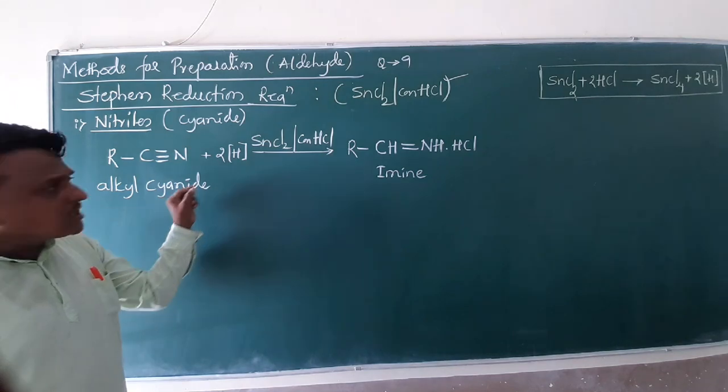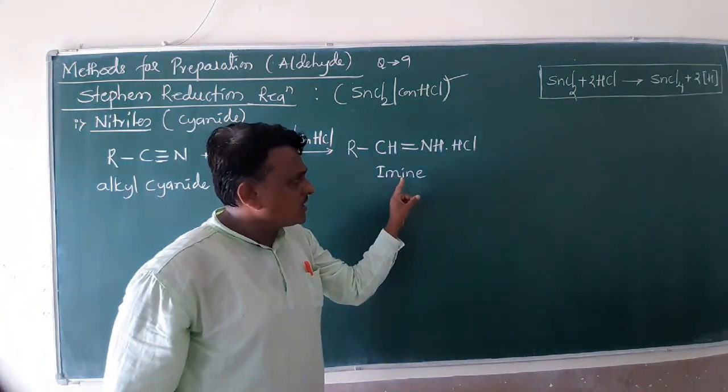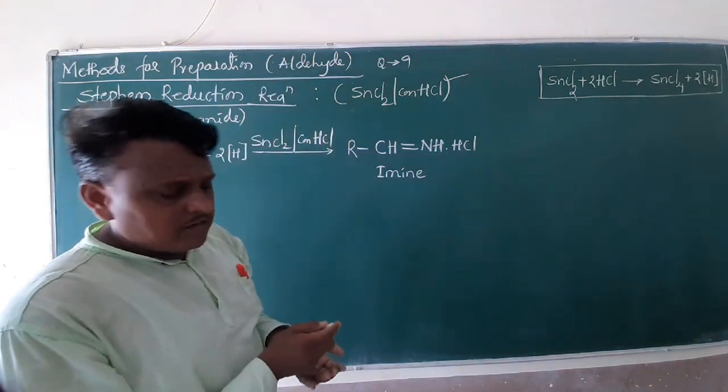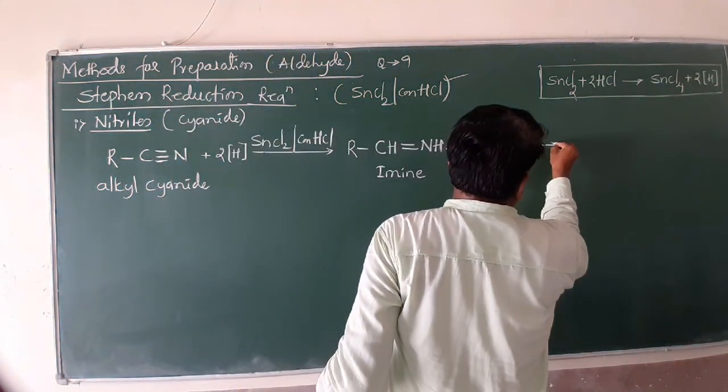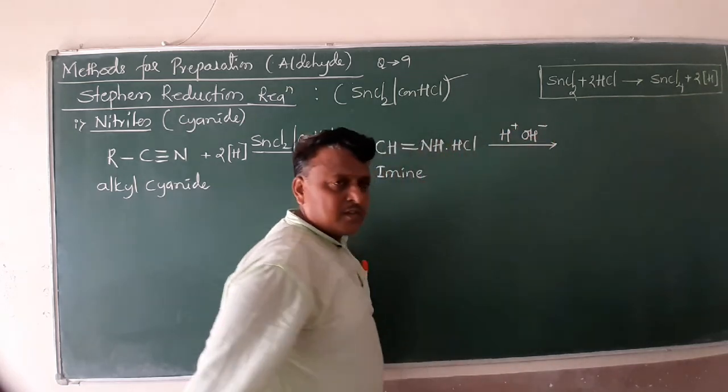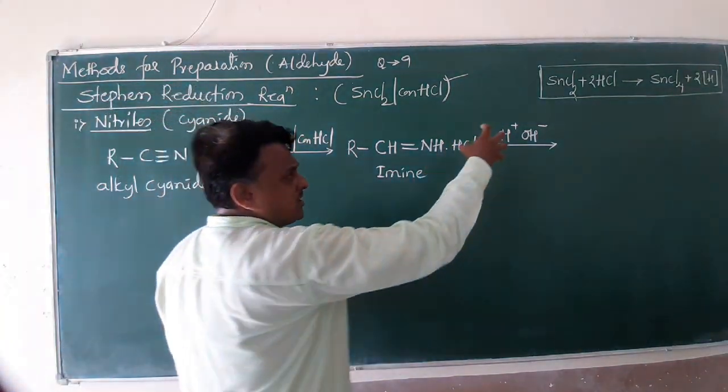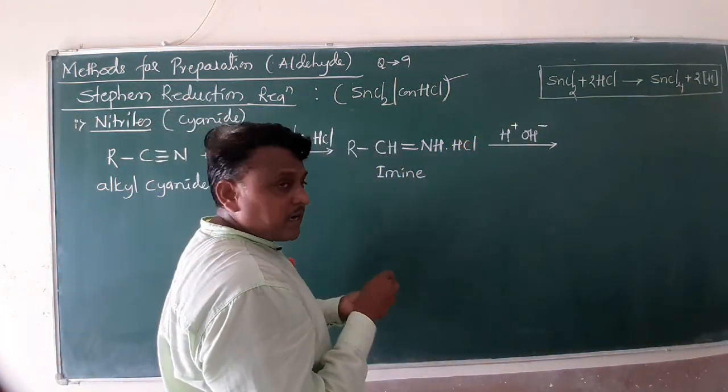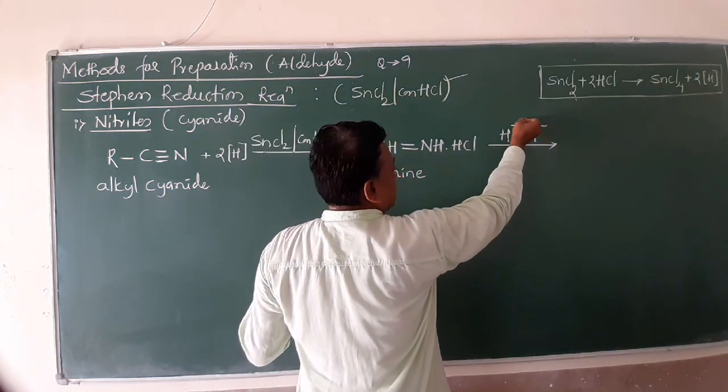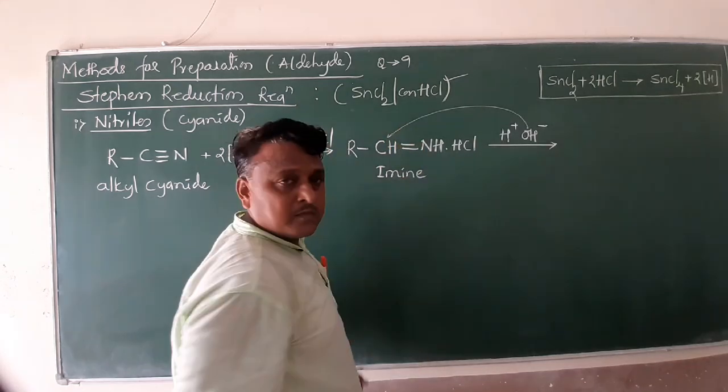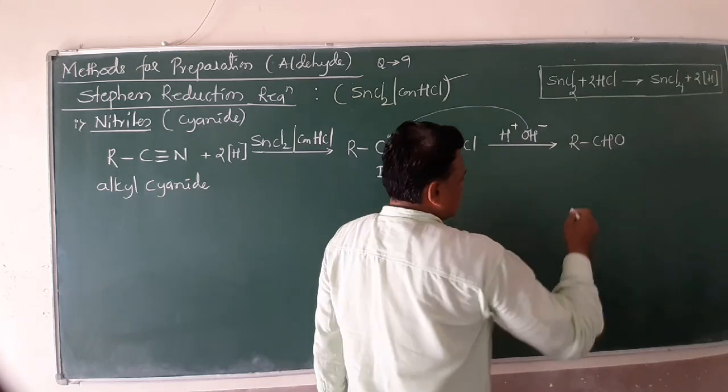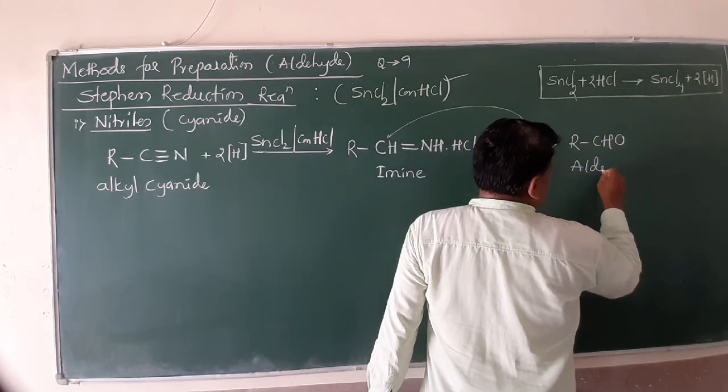Keep your sight. It means alkyl cyanide undergoes simple reduction. Our product is imine. But our target is aldehyde. What happens when this imine undergoes acid hydrolysis? I think all of you know H plus and OH minus. Once it reacts with acid hydrolysis, you keep in your mind, R, this is C-H and this is O. This oxygen is combined with this carbon. What about your compound? R-CHO. Our target is finished. It is aldehyde.